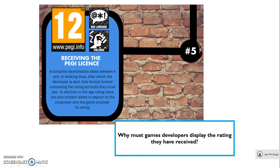The final stage is, of course, the receiving of the PEGI license. Once this whole process has gone through, the VSC will say this is the PEGI rating your game will receive — this is what has to be presented on the box when you release it to retailers. There are also other images that explain why it's got that rating, for example bad language and violence. Why do you think game developers display the rating they have received? They must — it is law for them to do that. Why do you think that is? Have a think, please make a note, and when you're ready, move on.